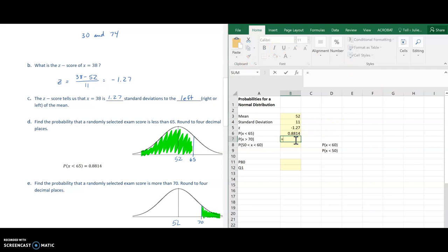So equals and instead of going straight into that normal distribution function, I'm going to start with a one minus and then type in the normal distribution. And then just as before, I'll go 70, choose the mean, choose the standard deviation, and I'm going to do one this time. You can type in one or you can choose that true on there and hit enter. And there is the probability that x is greater than 70.